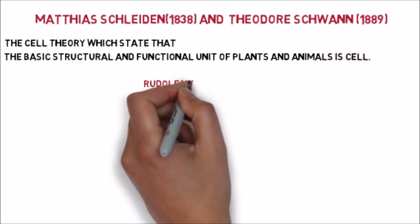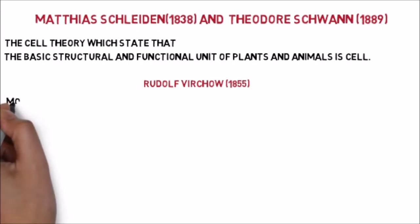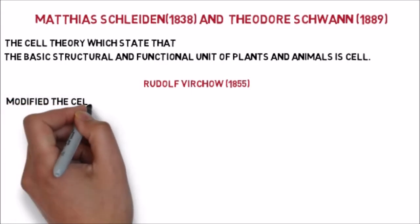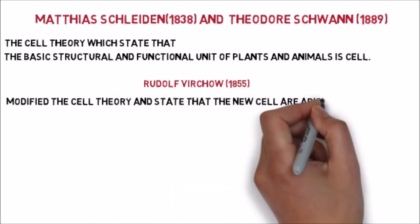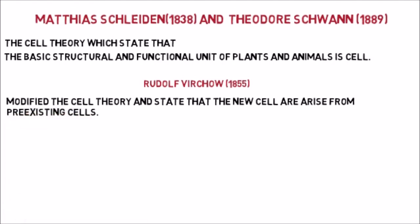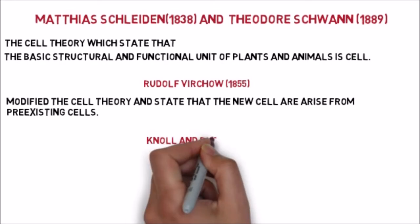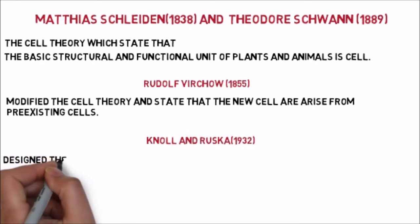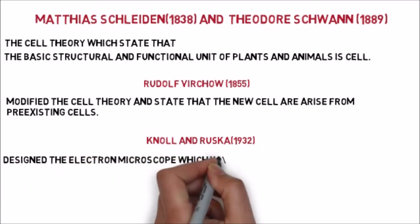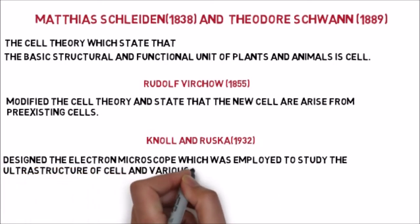After that, Rudolf Virchow made a very important discovery. He stated that every new cell arises by division from a pre-existing cell only. Then in 1932, Knoll and Ruska made a discovery that made it very easy to understand the structure of the cell. They designed the electron microscope to study the ultra-structure of cells and various organelles.